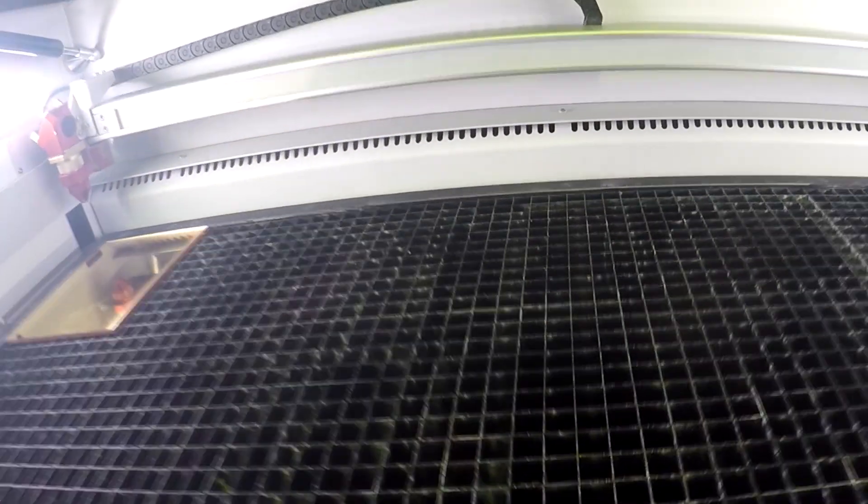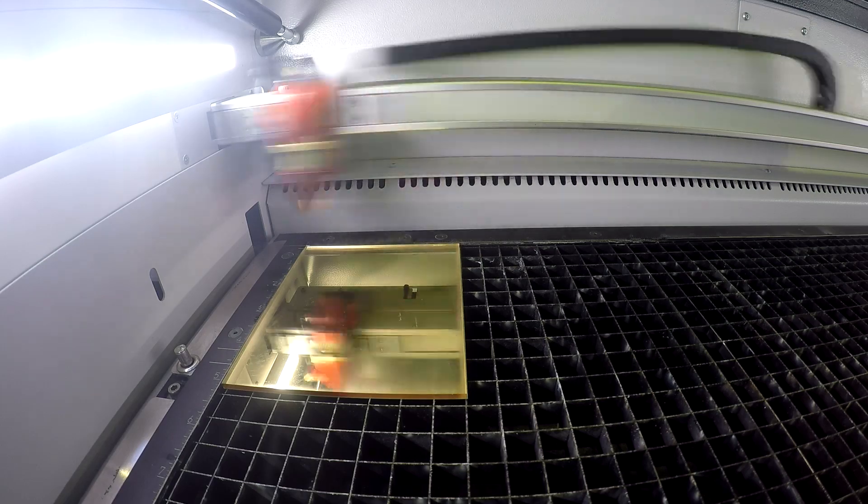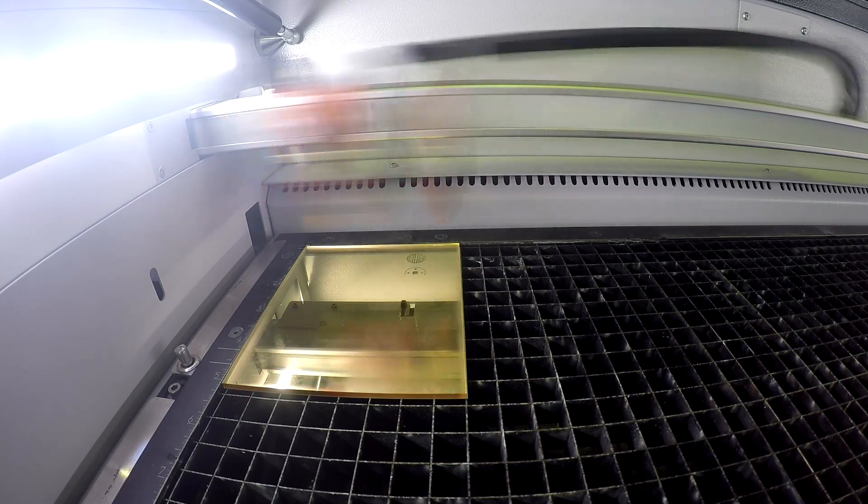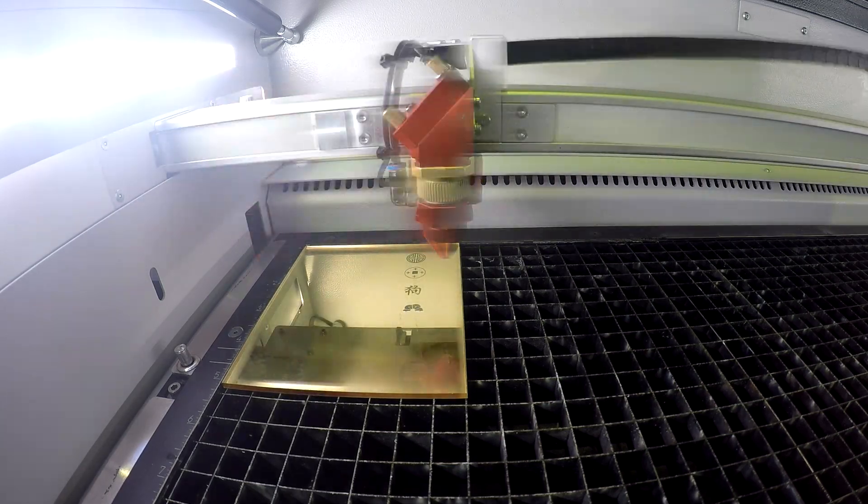Next we're going to show you how to do these tie bars. We began by placing our Troglas mirror into our Speedy 360 Flex machine. The Flex machine is great because it allows you to use two different laser sources, the fiber and the CO2.